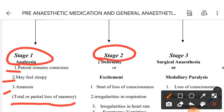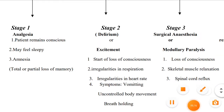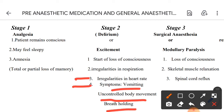The second stage is excitement and delirium. In this stage there is a start of loss of consciousness, irregularities in respiration, irregularities in heart rate, vomiting, uncontrolled body movement, and breath holding.